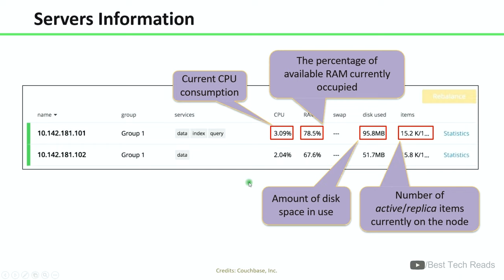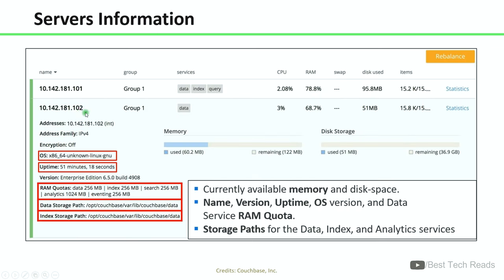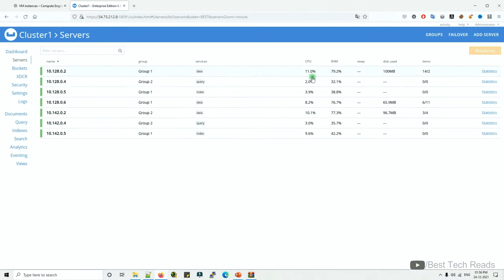From the Couchbase UI you can see the current CPU consumption, the percentage of RAM utilized, the amount of disk space in use, and the number of active and replica items currently on the node. You can click on a particular node and see the OS version, the uptime since the Couchbase service started, and the RAM quotas allocated along with the data and index storage paths.